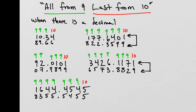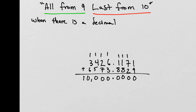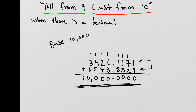Let's add these two complement numbers together to verify. 1 plus 9 gives us 10, write a 0, carry a 1. Then 1, 7, and 2 is 10, write a 0, carry a 1. Then 1, 1, and 8 is 10, write a 0, carry a 1. Again 1, 1, and 8 is 10, write a 0, carry a 1. Don't forget to bring that decimal down. Then 1, 6, and 3 is 10, write a 0, carry a 1. Then 1, 2, and 7 is 10, write a 0, carry a 1. Then 1, 4, and 5 is 10, write a 0, carry a 1. And 1, 3, and 6 is 10. So we're working with base number 10,000. Using the word formula 'all from 9, last from 10,' we get complement numbers that add up to a base number — in this case, base 10,000.